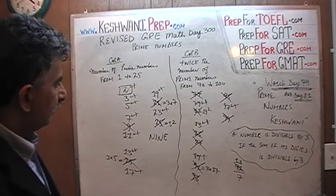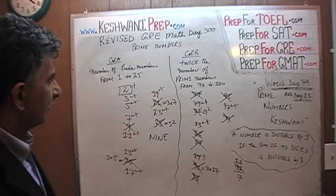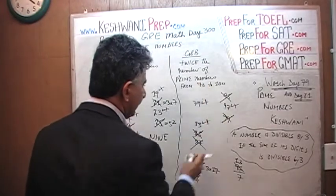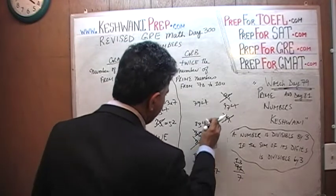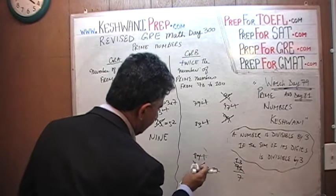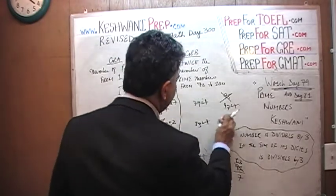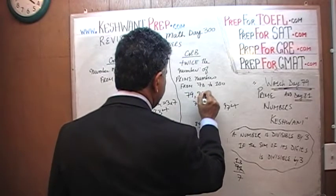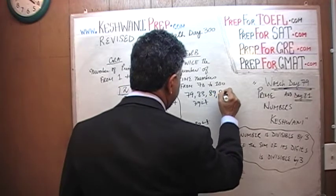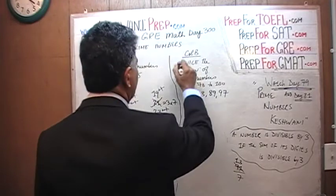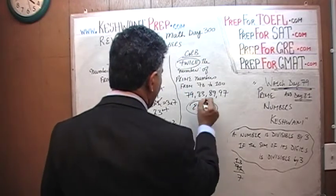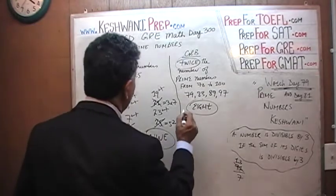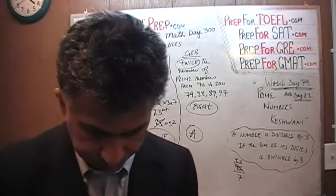Let's erase everything and just make a clear list. The prime numbers from 76 through 100 are: 79, 83, 89, and 97. That is only 4 prime numbers. Twice as many is going to be 8. But in Column A we have 9 prime numbers from 1 through 25. Therefore, the answer is A — Column A is bigger.